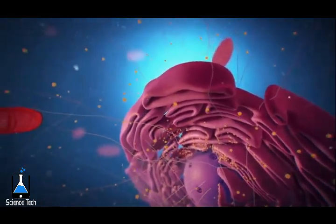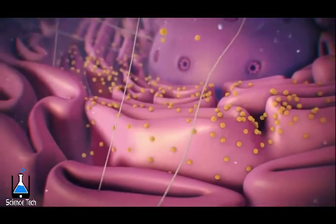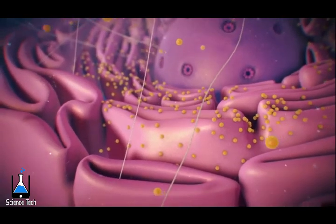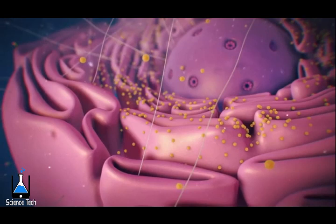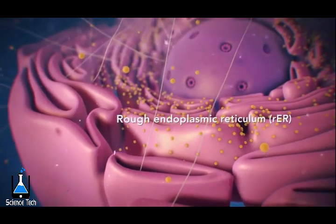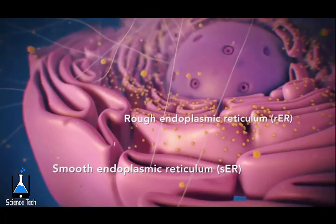Ribosomes may wander freely within the cytoplasm, or attach to the endoplasmic reticulum, sometimes abbreviated as ER. There are two types of ER. Rough ER has ribosomes attached to it, and smooth ER doesn't have ribosomes attached to it.